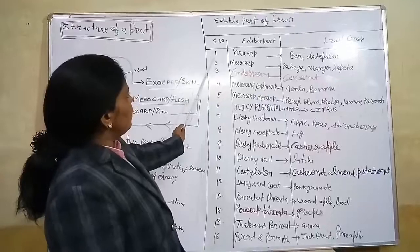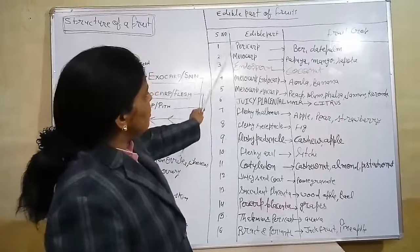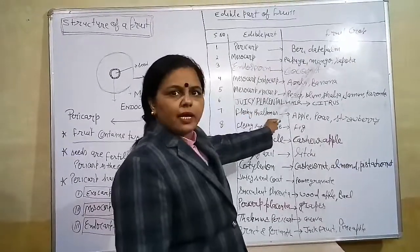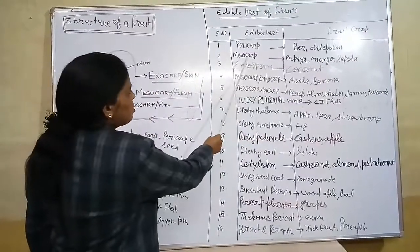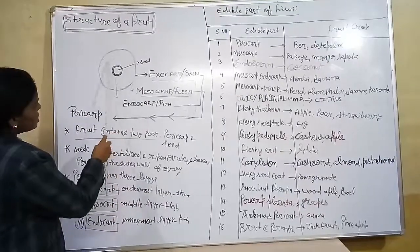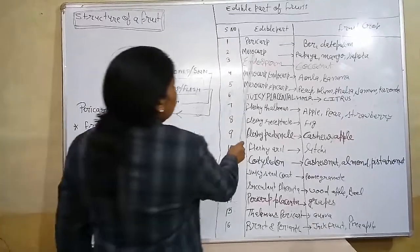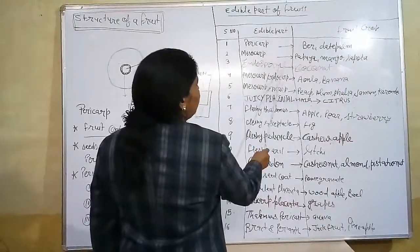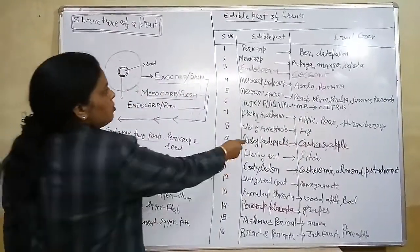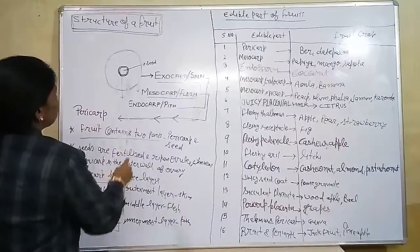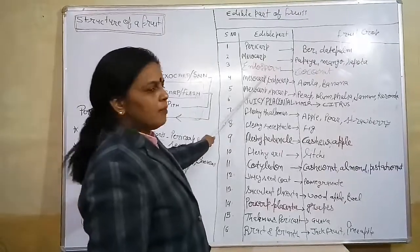The number one edible part is pericarp — pericarp is consumed in bear and dried form. Number two is mesocarp — mesocarp means the flesh portion of the fruit. The mesocarp is considered the edible portion in papaya, mango, and sapota. In papaya, sapota, and mango we consume this middle portion, excluding the pericarp.